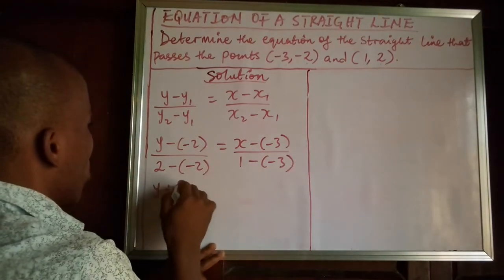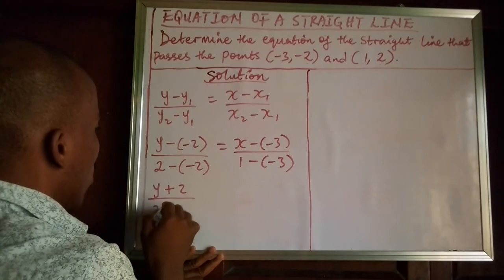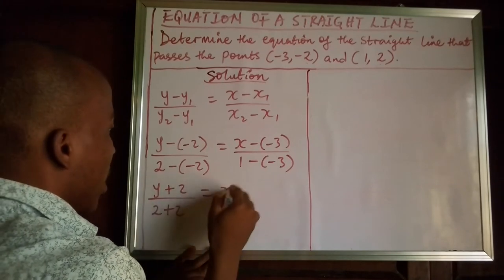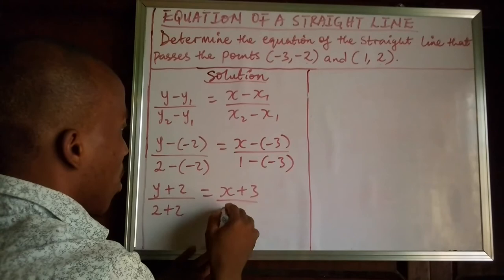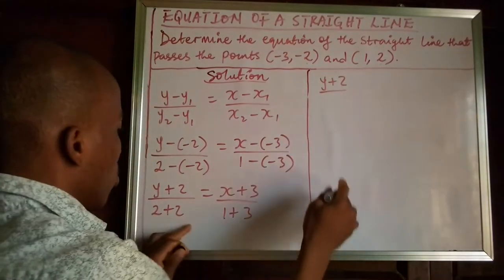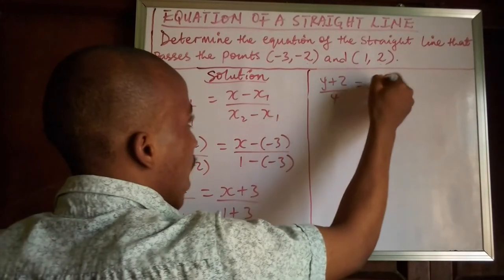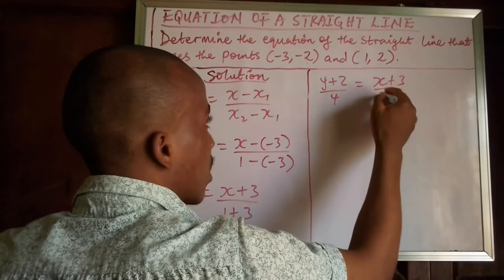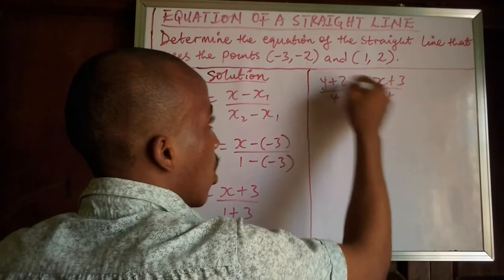So we have it as (y + 2)/(2 + 2) is equal to (x + 3)/(1 + 3). So we have it as (y + 2)/4 is equal to (x + 3)/4.